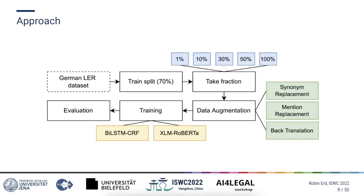Now we come to the section which covers our approach. The training and evaluation workflow is illustrated in this diagram. We first took the train split of the German legal entity recognition dataset and then took a fraction of the train split containing either 1%, 10%, 30%, 50%, or 100% of all sentences. For setting the baseline we skipped the augmentation step, and for testing the different data augmentation techniques we applied the technique in this step. Finally we trained both models on the fraction and evaluated model performance on the test split. As a main metric during evaluation we decided to use the micro F1 score.